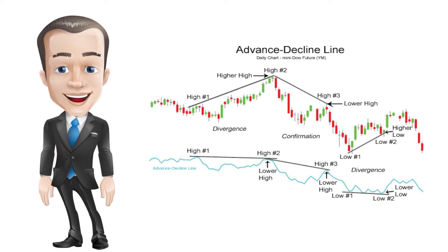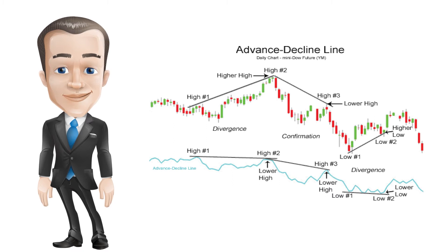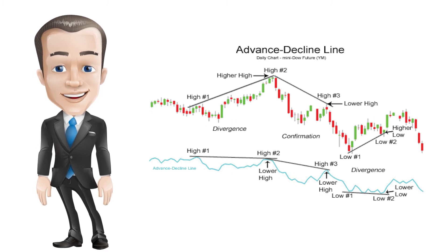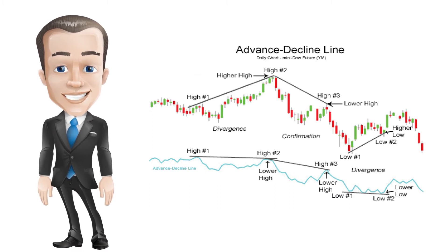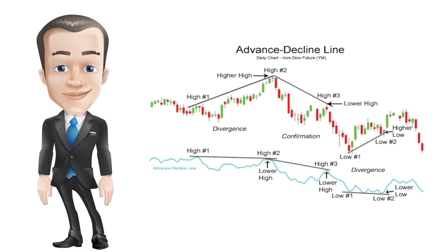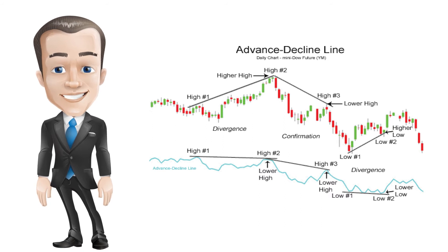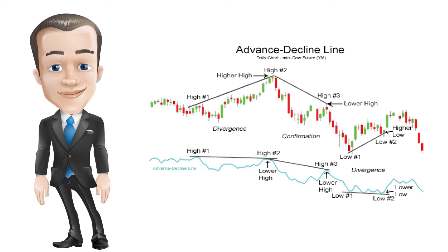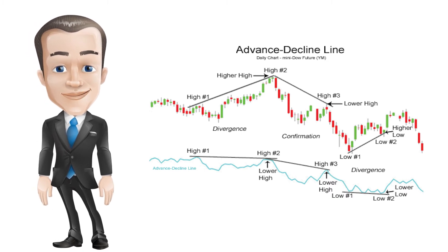From high 2 to high 3 is an example of the AD line confirming the trend — both the mini Dow future and the advance-decline line made lower highs. From low 1 to low 2, another bearish divergence occurred: the mini Dow futures contract made a higher high, which appeared bullish, but the advance-decline line did not confirm the ascent — it was making lower lows during the entire rally. This bearish divergence signaled that stock and index future traders should be wary, as the market as a whole was not behind the recent move higher.